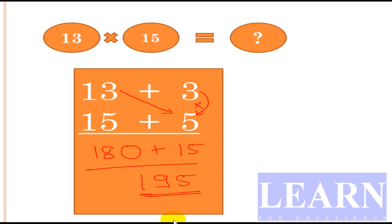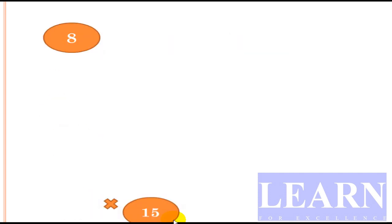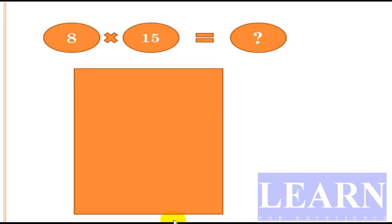Now we'll look at one more example where one number is less than the base and the other number is greater than the base. We'll look at 8 × 15, where 8 is less than the base and 15 is greater than the base.